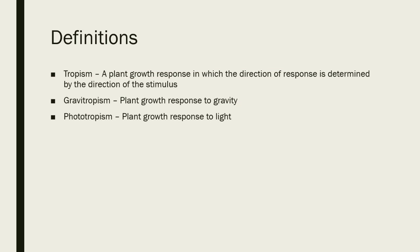There are a couple of definitions that you really need to know. Tropism is a plant growth response in which the direction of response is determined by the direction of stimulus. There are two main stimuli we'll be looking at today: one is gravity and two is light. Gravitropism is the plant growth response to gravity, and phototropism is the plant growth response to light.